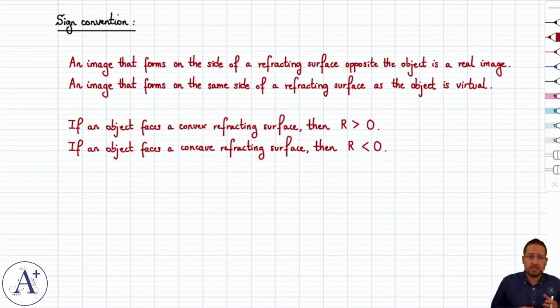Now, if the image forms on the same side of a refracting surface as the object, then it's virtual. Again, think of a diverging lens, put the object in front, it will always produce an upright, reduced virtual image in front of the lens. So that explains real image versus virtual image.